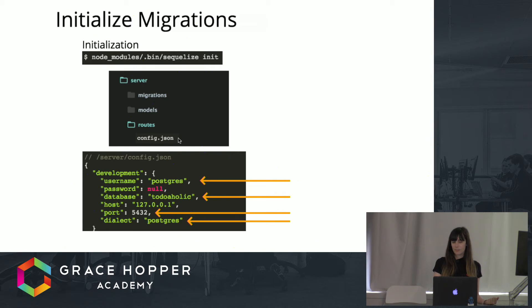In the config.json is where you put in your database name, the dialect you're using — which is probably Postgres — and your username, which by default is also Postgres.